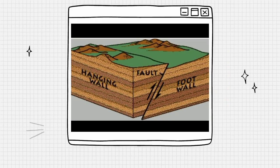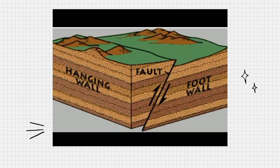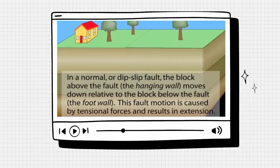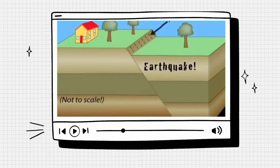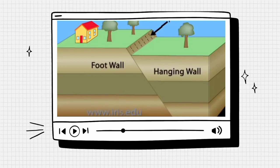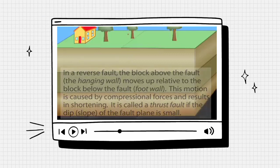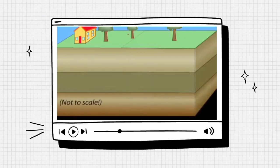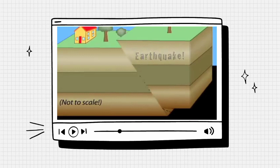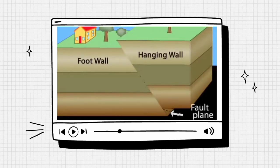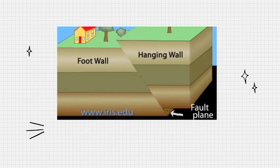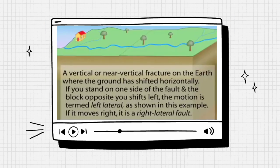As can be seen in the image, the rock above the fault is called the hanging wall and the one below is called the foot wall.